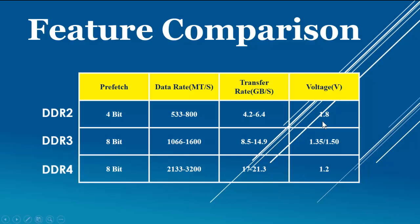The next feature is voltage. DDR2 works on 1.8 volts, whereas DDR3 works on 1.35 or 1.50 volts, which is less than DDR2.